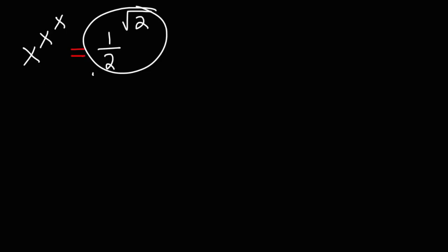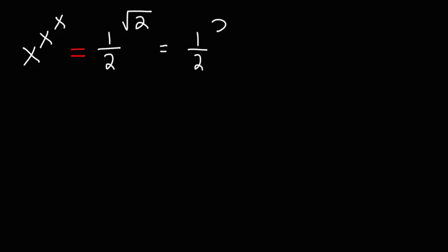Now let's get back to this problem. The square root of 2 can be rewritten as 2 raised to the one-half. So the first thing we want to do is get rid of the radical.